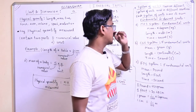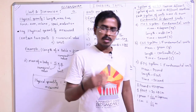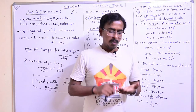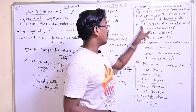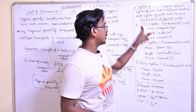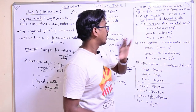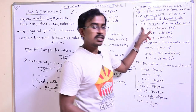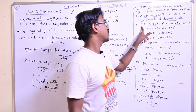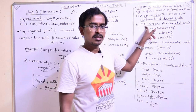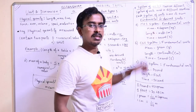If we look at MKS, M represents meter, K represents kilogram, and S represents seconds. So, in the MKS system, the fundamental units are: length is meter, mass is kilogram, time is second.